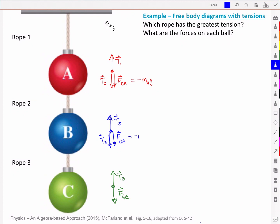This is equal to a negative MBG, and this is equal to a negative MCG because it's downward. Those will all be negative, as well as some of the tensions.